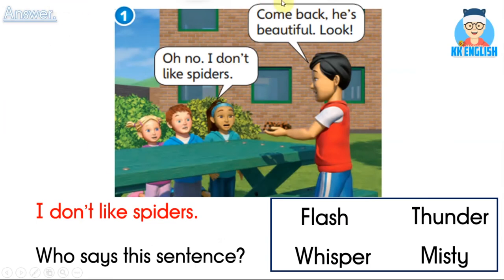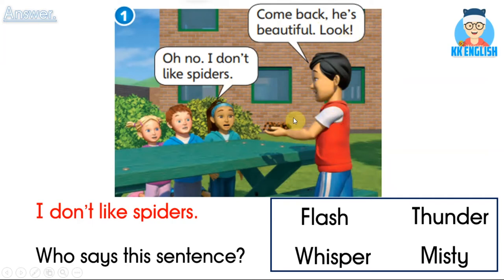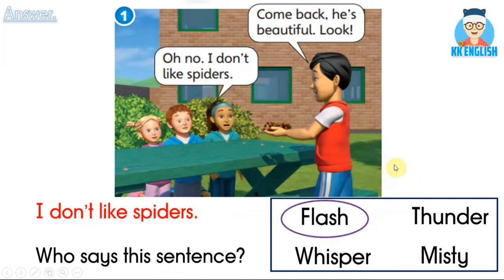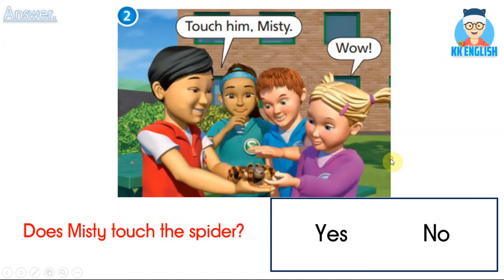People, look at picture number one. This boy is named Whisper, this girl is named Flash, this boy is named Hunter, and this girl is Misty. Oh no! I don't like spiders! Say bye, Flash. Come back! He's beautiful. Look! 回来，它很美丽的，你看一看。Whisper说了这句话。现在呢，你们要回答以下的问题。I don't like spiders — 谁说了这句话，谁说呢？这位小朋友叫什么名字啊？Flash! Flash说了 I don't like spiders. 我不喜欢蜘蛛。